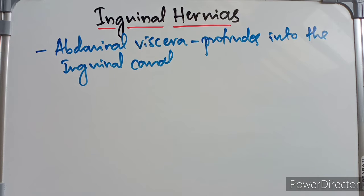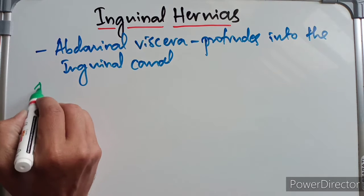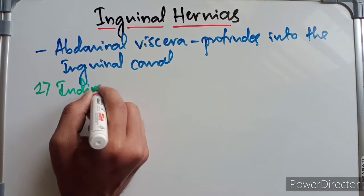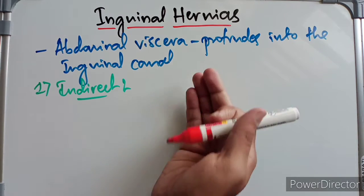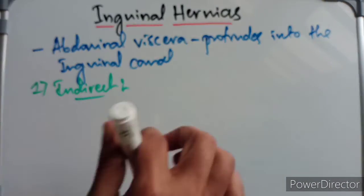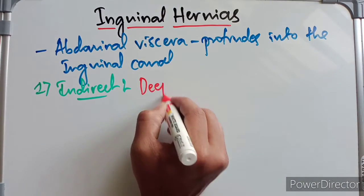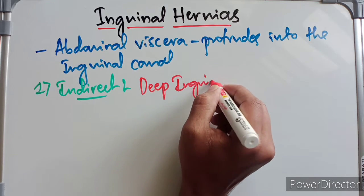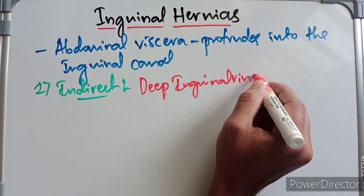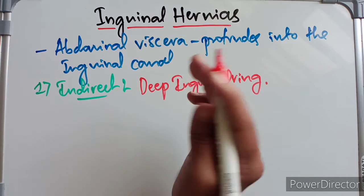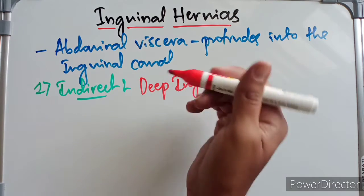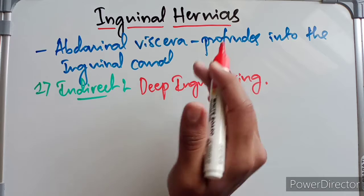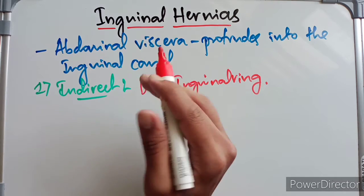First, let's discuss the indirect inguinal hernia. In the indirect inguinal hernia, the hernial sac enters the inguinal canal through the deep inguinal ring. So the indirect hernia occurs when the abdominal viscera or hernial sac enters through the deep inguinal ring into the inguinal canal, lateral to the inferior epigastric artery.